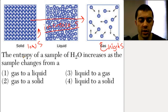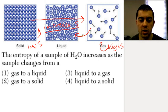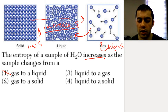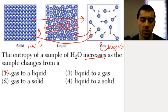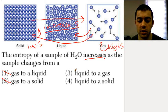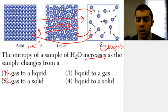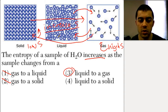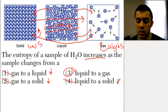If a question asks where the entropy of a sample of water increases: going from gas to liquid would be decreasing entropy since gas is high entropy and liquid is more ordered. Gas to solid would also be a decrease — far more structured than the gas phase. But liquid to gas would be an increase in entropy — gas has the highest entropy compared to liquid and solid, so going from liquid to gas increases disorder and therefore entropy. Liquid to solid would be a decrease since we become more ordered. The correct answer is liquid to gas.